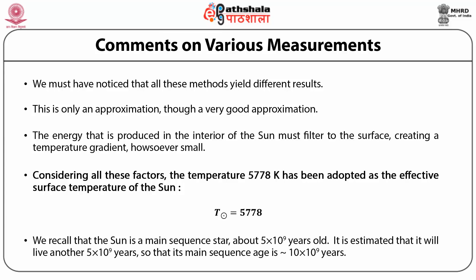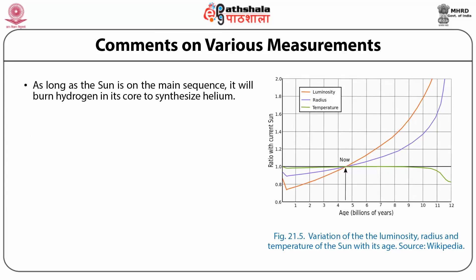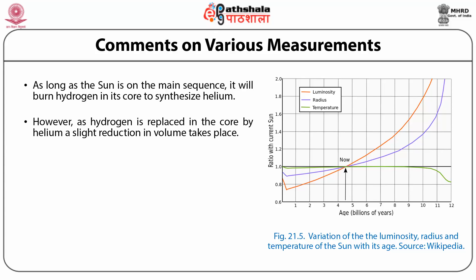The Sun is a main sequence star which is about 5 × 10⁹ years old. It is estimated that it will live another 5 × 10⁹ years, so its main sequence age is about 10 × 10⁹ years. As long as the Sun is on the main sequence, it will burn hydrogen in its core to synthesize helium, and there will be little change in its effective temperature. However, as hydrogen is replaced in the core by helium, a slight reduction in volume takes place, bringing about gravitational contraction, and the consequent release of gravitational energy causes the effective temperature to increase gradually.